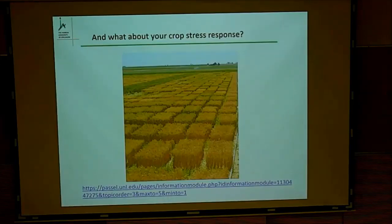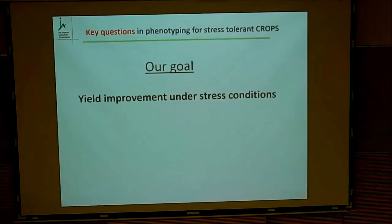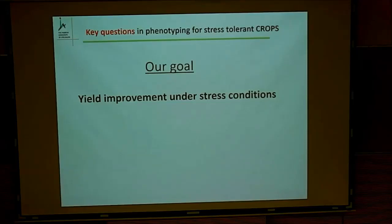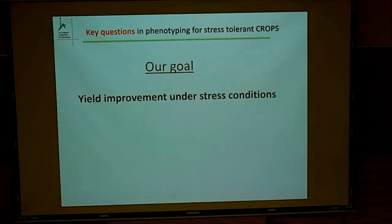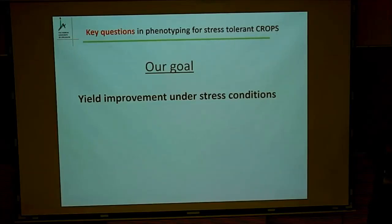The same thing happens in our field — we can image the plants, we can see them, but we also want to do some stress tests to see what happens under stress. Our goal — we are here in the Faculty of Agriculture — I don't like to use all kinds of phrases like drought stress resilience resistance and so on. Simply put: we try to improve the yield under stress conditions. You can call it as you wish, but that is the real goal.